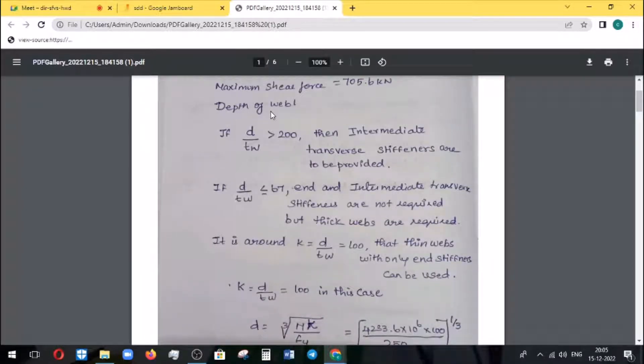Next, we will find out the depth of web. There is a condition in the book. Simply to say that if D by TW is 90, then we consider D by TW is 67. If D by TW is 200, then we provide Longitudinal and Transverse Stiffness, Intermediate and Vertical Stiffness. The recommendation is we have to choose considering the condition. For example, if D by TW is 90, we need to consider it as 100. We need to know approximately depending on the amount of time.